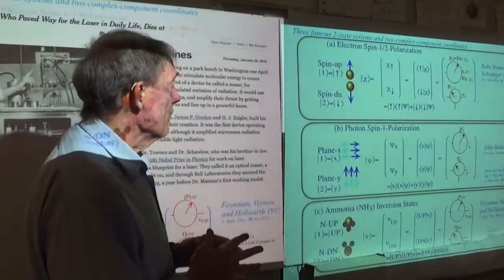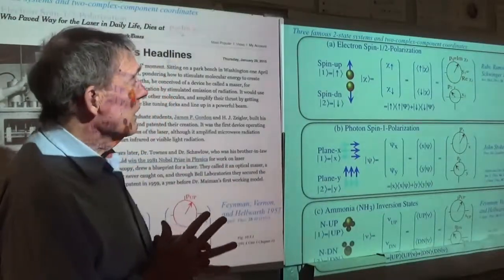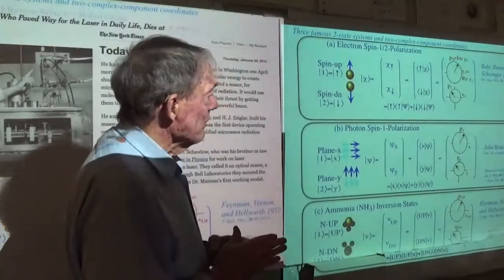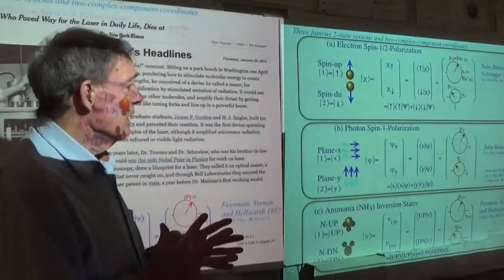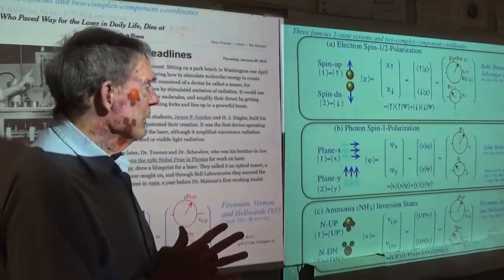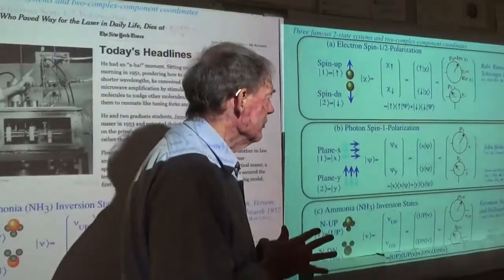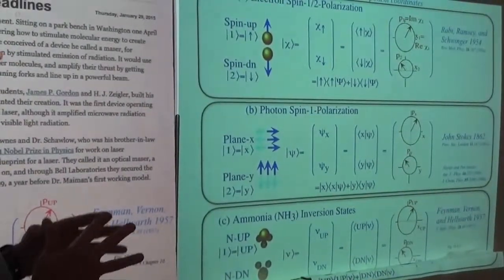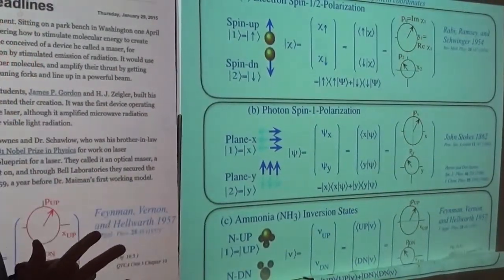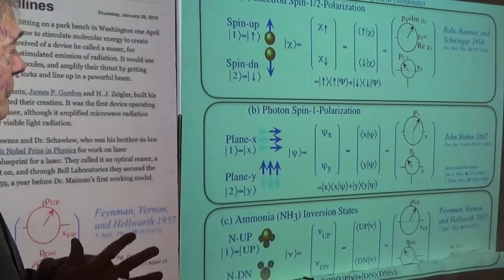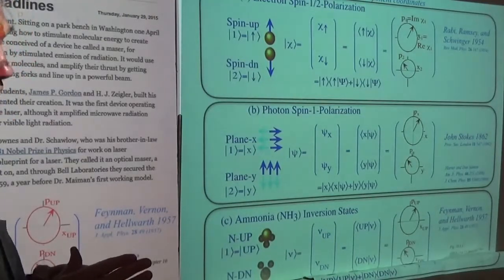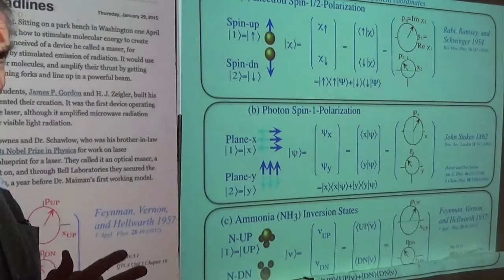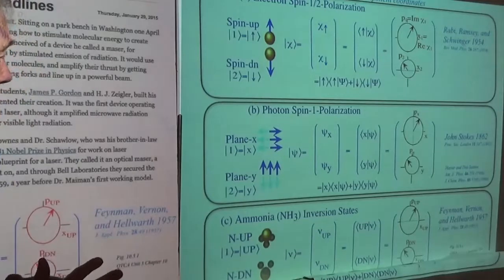The most classical of these two examples is the electromagnetic radiation polarization, whose theory goes back to 1862 or 1863. The Stokes vector is going to play a big role today in our description of dynamics. We'll call it the S-vector, and that will also stand for the spin vector if you're doing quantum mechanics.